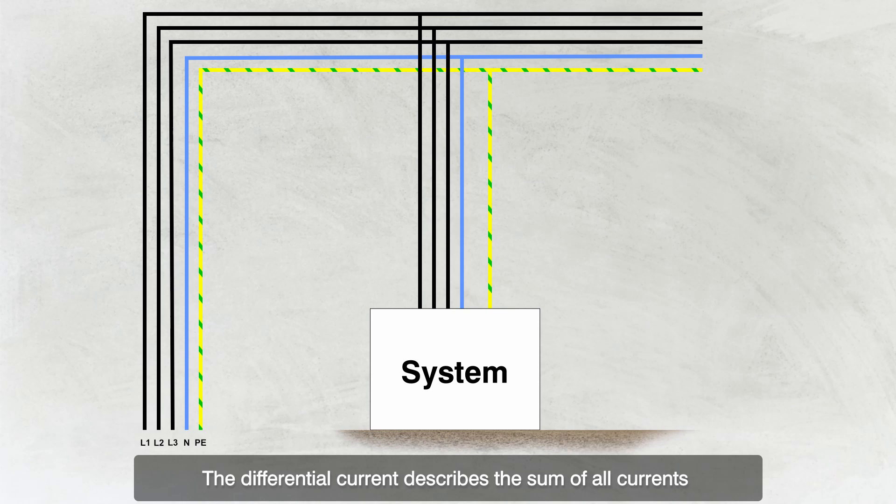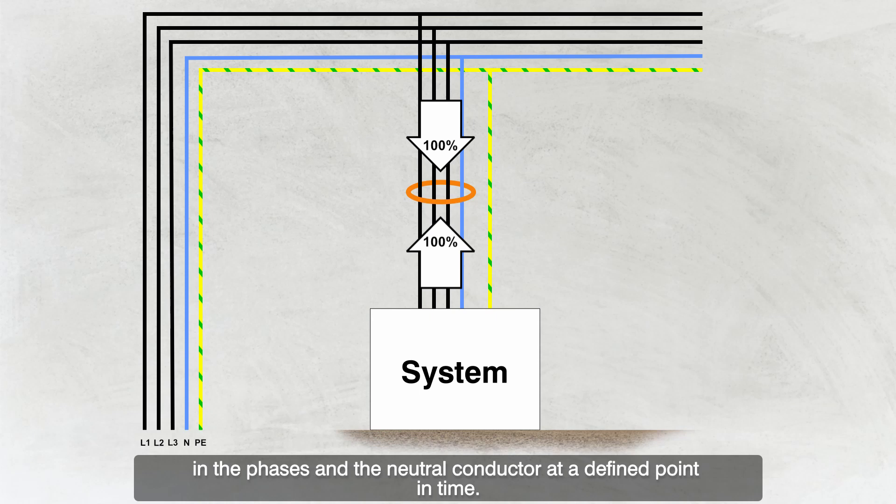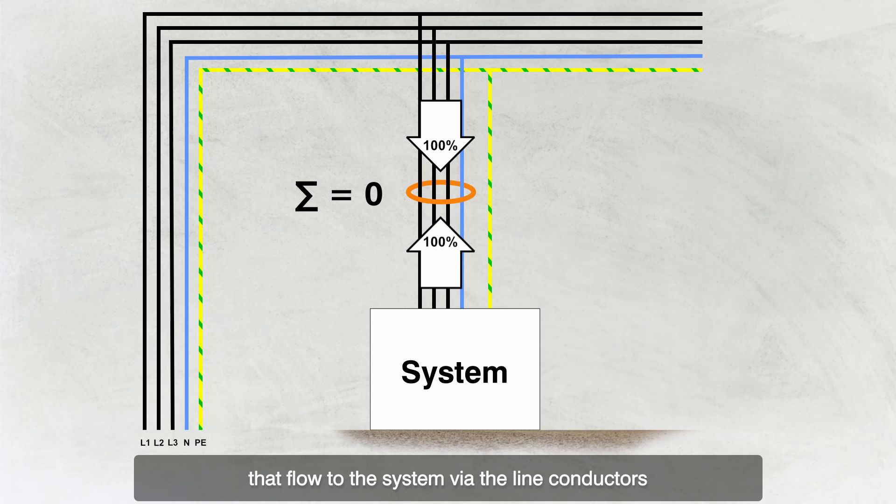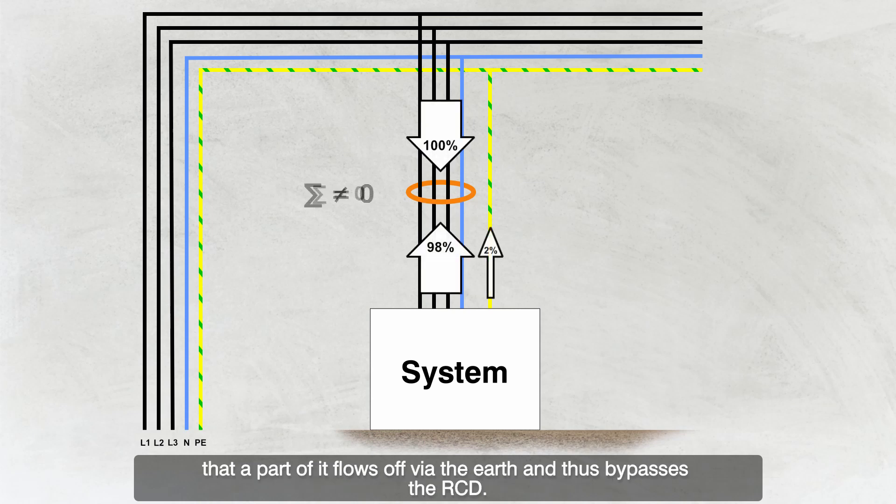The differential current describes the sum of all currents in the phases and the neutral conductor at a defined point in time. Ideally, this value is zero, because all currents that flow to the system via the line conductors also return this way. If this value is greater than zero, it means that a part of it flows off via the earth and thus bypasses the RCD.